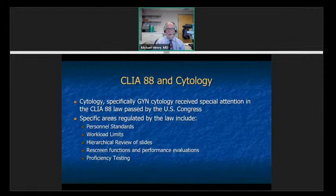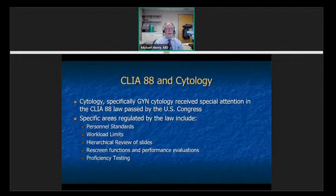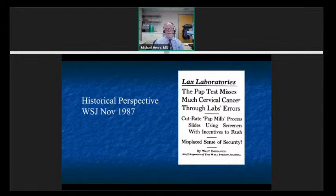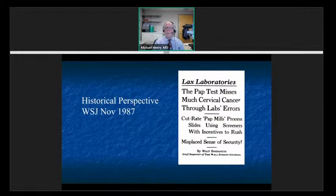There are very specific things in the law that talk about performance evaluations of cytotechnologists, and proficiency testing is a requirement in the federal law for GYN cytology — unlike any of the other areas in anatomic pathology. You might ask why this came about. For those of us of a certain age, we actually remember there was a Wall Street Journal article in 1987 that talked about pap test misses through lab errors and pap mills — labs reading slides at home, looking at large numbers of slides. This was one of the things that caused cytology to become a focus of the CLIA 88 regulations.